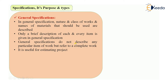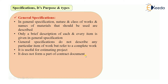General specifications do not describe any particular item of work but refer to the complete work. This is a very important point — general specification will not describe any particular item of work. It gives a brief description about each item and gives total description about the complete work. It is useful for estimating the project and it does not form a part of the contract document. You cannot use this type of specification in the contract agreement or contract document.